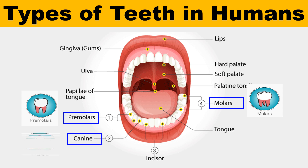The next type of teeth are canines, also called cuspid teeth. They are situated at the corners of the dental arches and have a sharp, elongated, and pointy surface. Their primary function is to grip and tear food. Tough food such as meat is also ground by these canines. Humans have four canines, two in the upper jaw and two in the lower jaw.